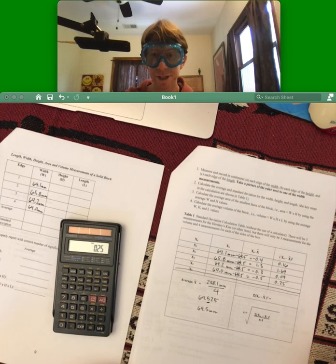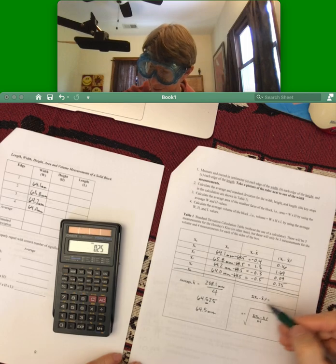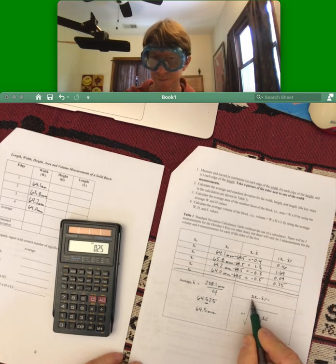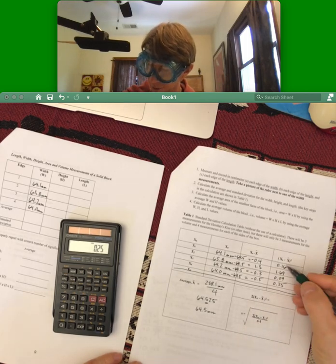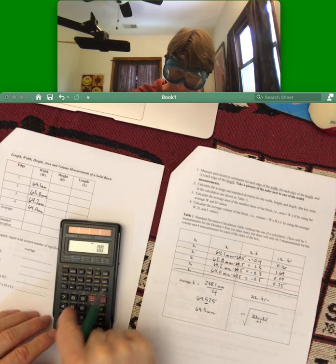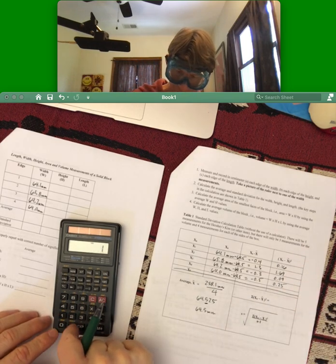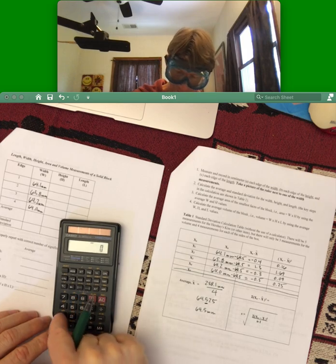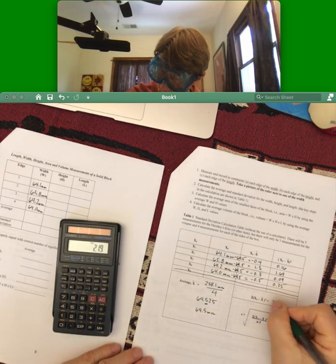Now you'll have your own numbers here, but I am stepping you through the process. This sum means take the sum of all these values: 0.25 plus 0.09 plus 1.69 plus 0.16. I get 2.19.